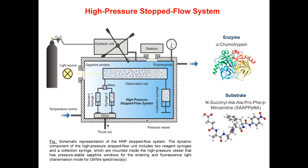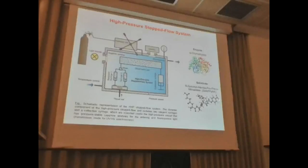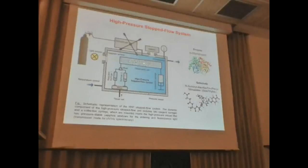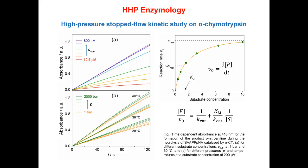How can this be measured? Typically these reactions occur on the millisecond timescale, so you can use a high-pressure stopped-flow apparatus. In this system, two syringes — one containing the enzyme, one containing the substrate — are mixed under a particular pressure on the millisecond timescale. The system evolves with time and the product is analyzed by UV-visible or fluorescence spectroscopy, recorded by a detector, measuring product formation as a function of time under defined pressure conditions.